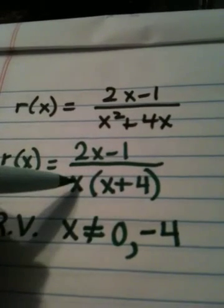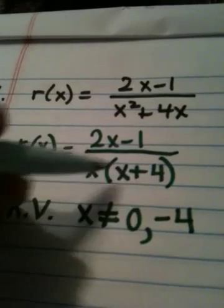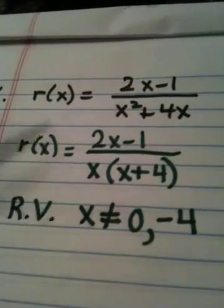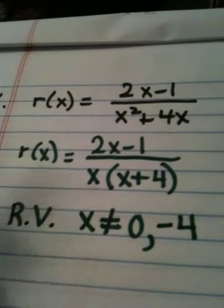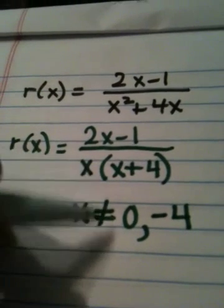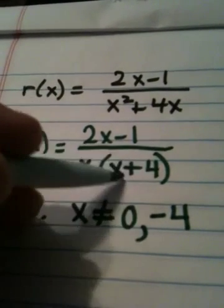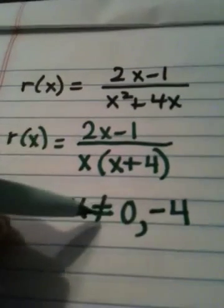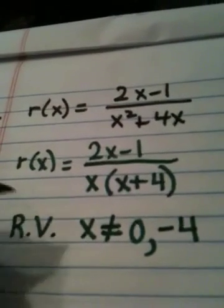We factored first and then we basically set each factor to zero and solved it if you were actually showing every step of the work, but that's not necessary. What makes this zero is zero, so we restrict it. What makes this factor zero is negative 4, so it becomes a restriction. So this time we have two restrictions.